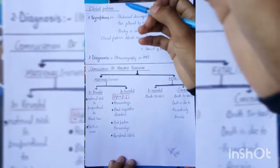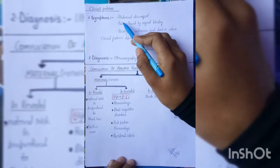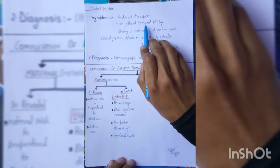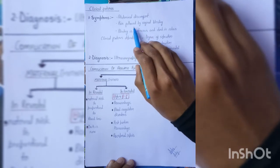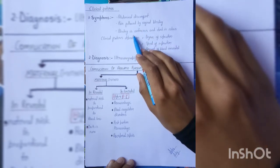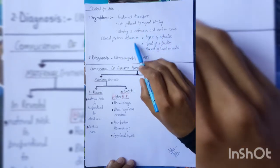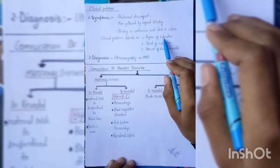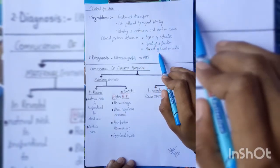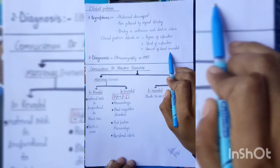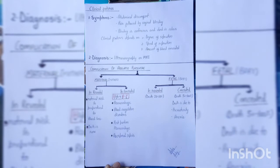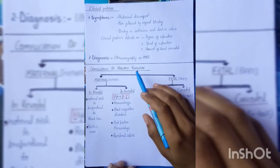Clinical features of abruptio placenta: abdominal discomfort, pain followed by vaginal bleeding, and the bleeding is continuous and dark in color. Clinical features depend on degree of separation, speed of separation, and amount of blood concealed. Diagnosis is made by ultrasound and MRI.